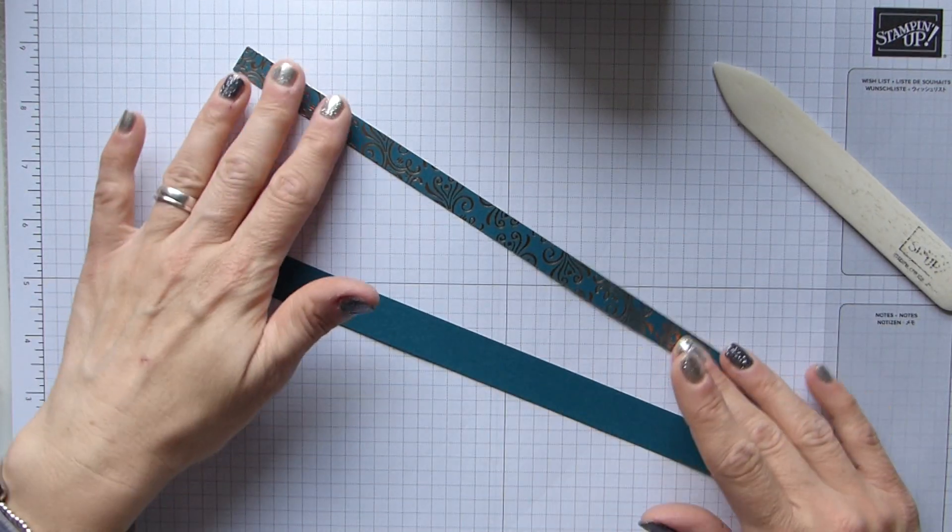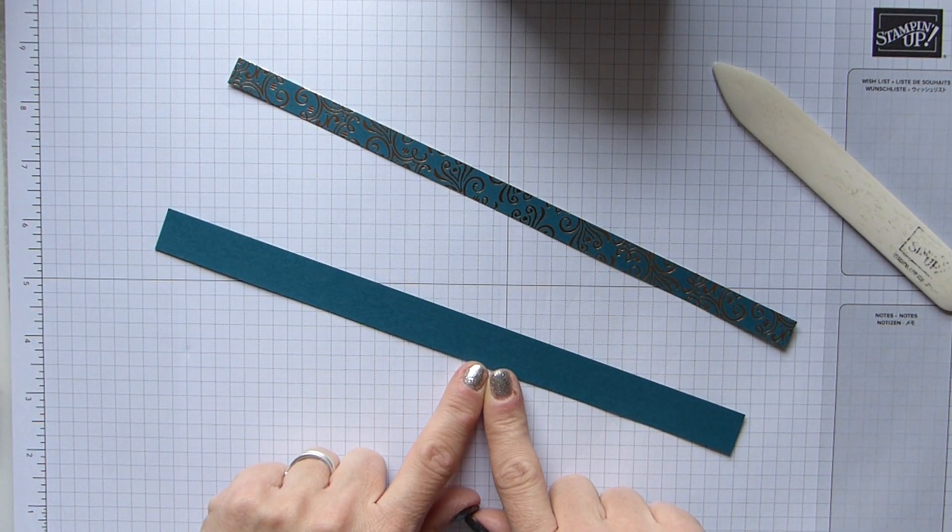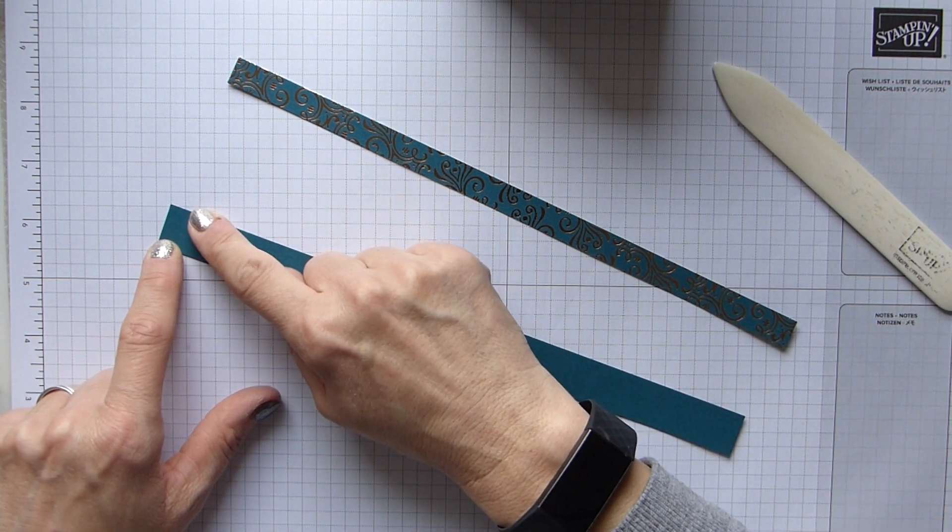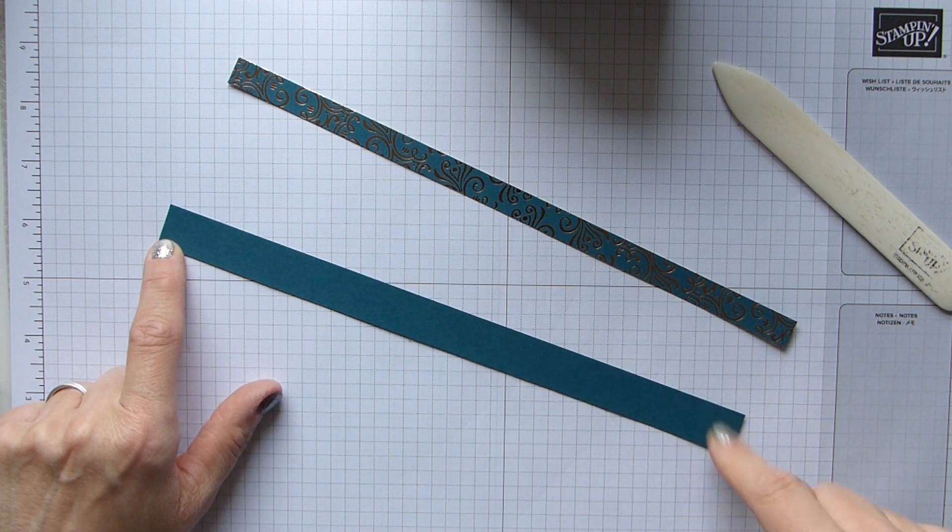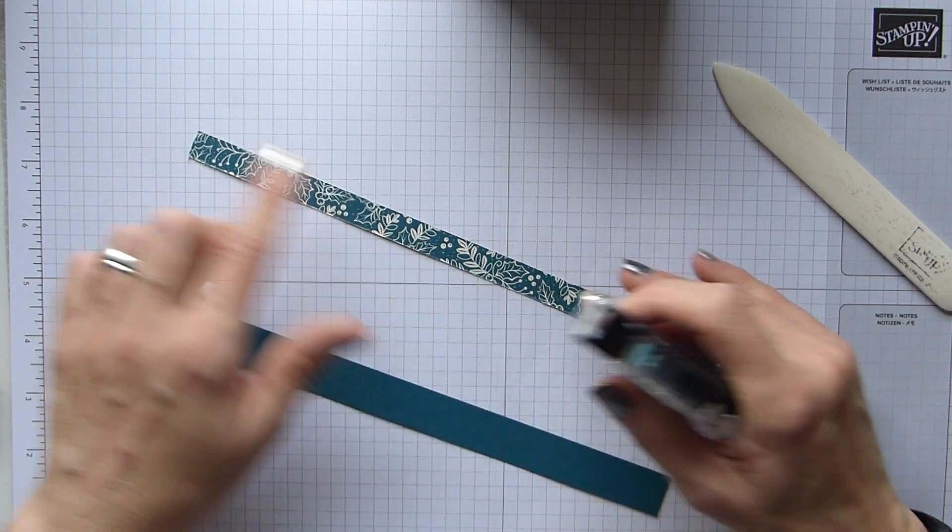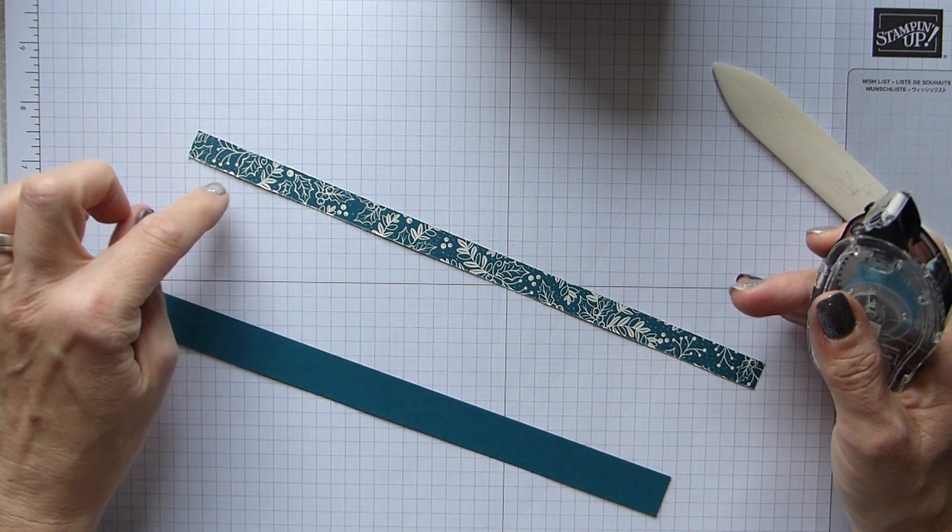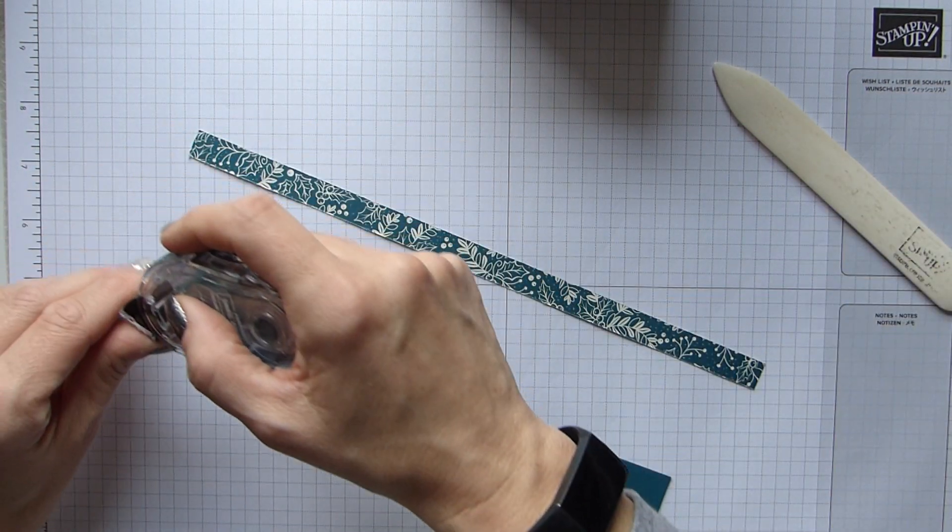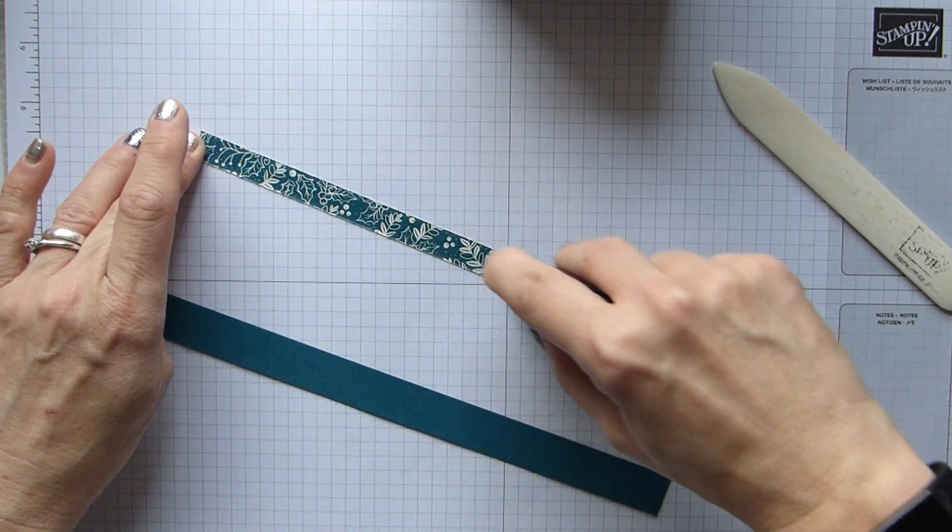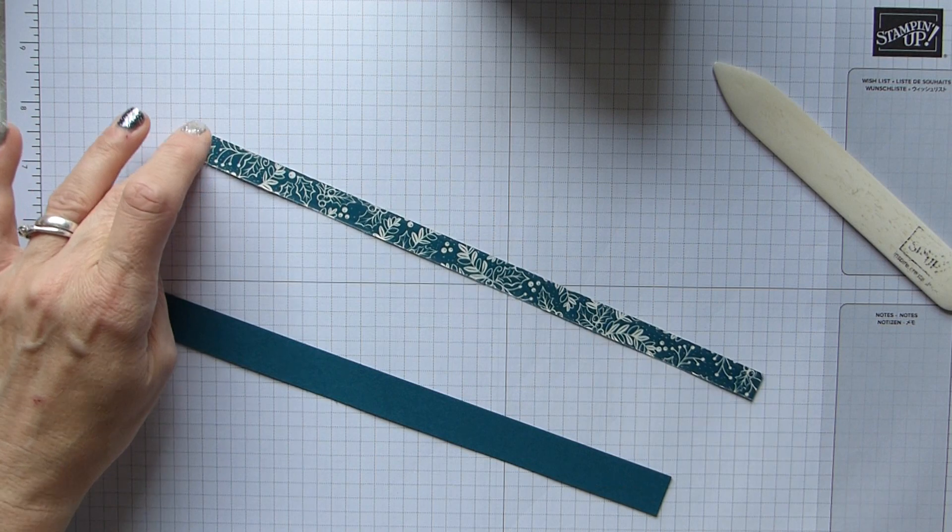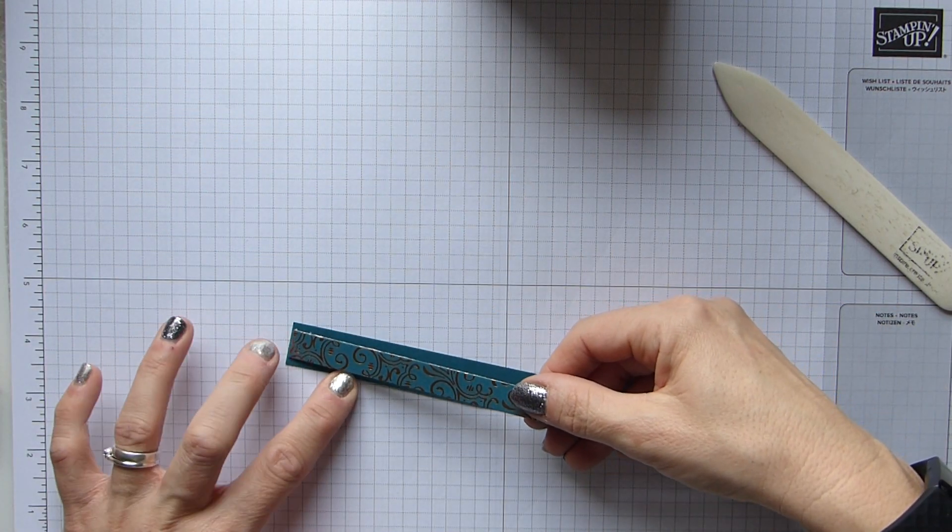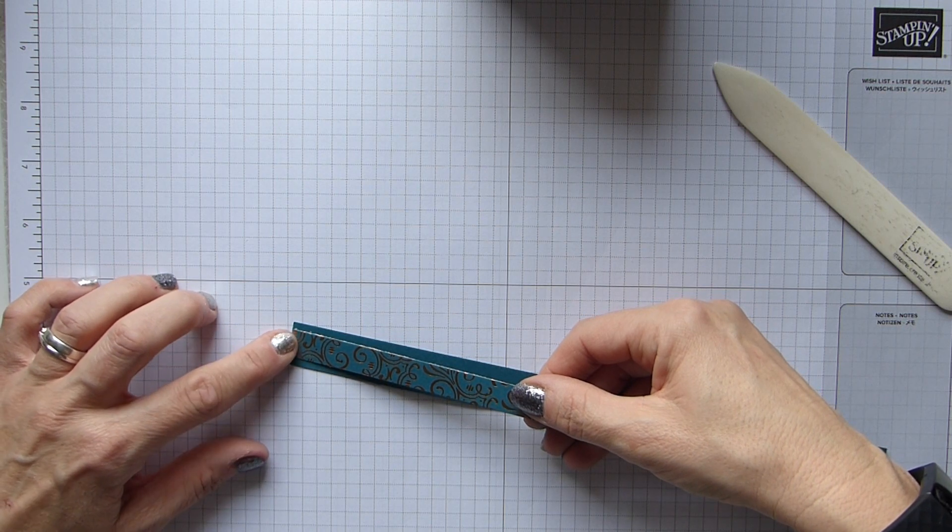And then as you know, I'm going to add some adhesive to these little tabs at the side. And oh crumbs, can't pick anything up today. And then just pop those under there, same on the other side.